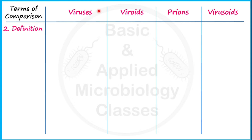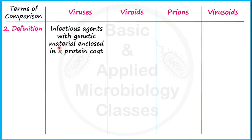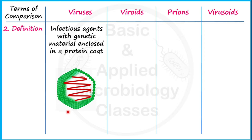Now for definitions: viruses are infectious agents with genetic material enclosed in a protein coat, which is why we call them nucleoprotein particles — they are made up of nucleic acid (the genetic material) and protein (the coat). In this diagram, the greenish part represents the protein coat and the reddish filament represents the genetic material.